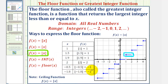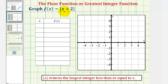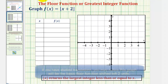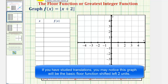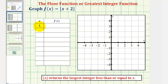When graphing these functions by hand, once we find one piece we can quickly graph the remaining pieces. Let's look at an example: f of x equals the greatest integer of the quantity x plus two. Let's begin by completing a table of values for x from one to two. When x is one, we have the greatest integer of one plus two, which is three. The largest integer less than or equal to three is three, so our function contains the point one comma three.